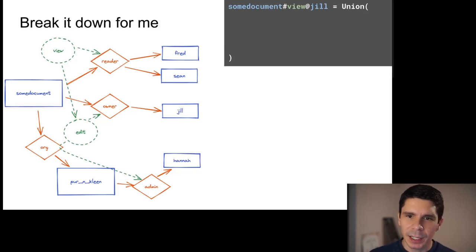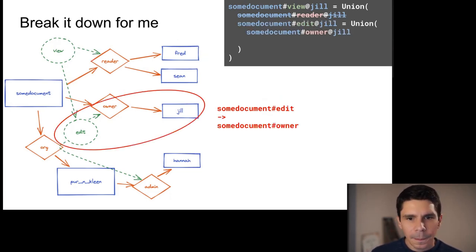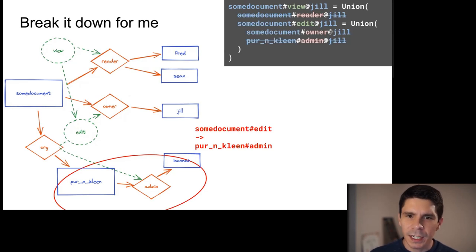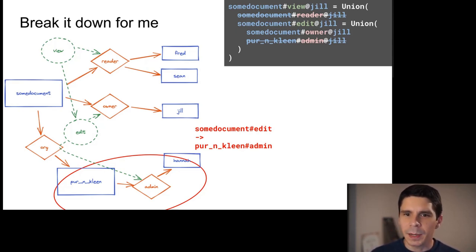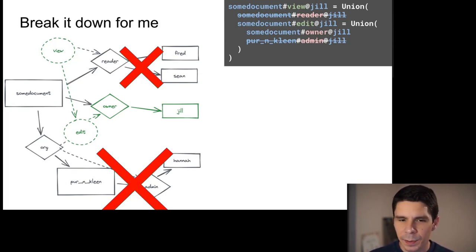Here's how we break a problem into sub-problems. The top-level question: can Jill view some document? This is a union of sub-problems. Is Jill directly a reader? No. Does Jill have edit on the document? That's another union: is Jill an owner? Yes. Is Jill an admin of the document's organization? No. Each sub-problem is evaluated independently and results combined to make the top-level determination. Two branches did not yield permissions; one did.